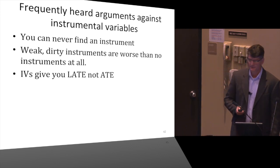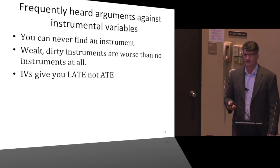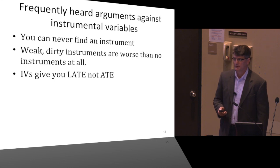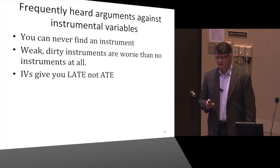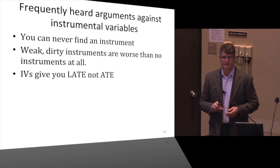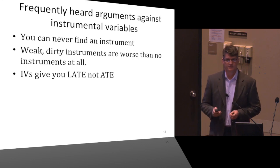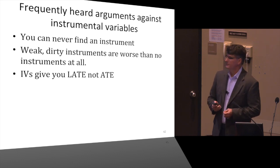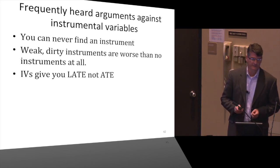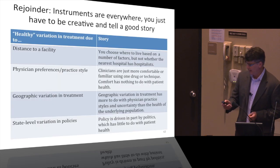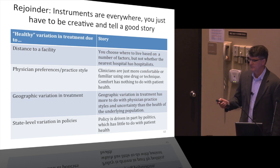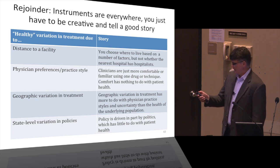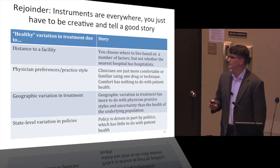Now for frequently heard arguments against instrumental variables. The first: you can never find a decent instrument. This is a common frustration from graduate school, but it's just not true. There are several categories where instruments can be found: distance to a facility (the McClellan-Newhouse approach, arguing you choose where to live based on many factors but not whether the nearest hospital uses a lot of catheterization); physician preferences, using the previous patient's treatment as a proxy for physician habits; geographic variation in practice styles; and state-level policy variations driven by politics rather than patient health.